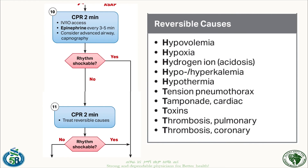The five T's: Tension pneumothorax — deflate with needle thoracotomy, which usually effectively decompresses without requiring a chest tube. Cardiac tamponade — if an experienced provider is available, pericardiocentesis can be done quickly during the pulse check. Toxins — provide the appropriate antidote depending on the toxin (e.g., naloxone for opioids). Thrombosis — pulmonary: give tPA; coronary: after ROSC is achieved, take the patient to the cath lab. These are the only advanced interventions available for non-shockable rhythms.